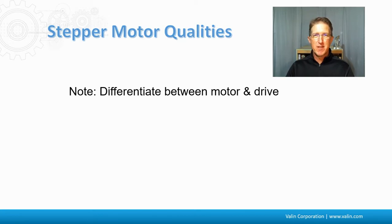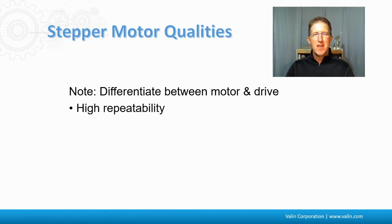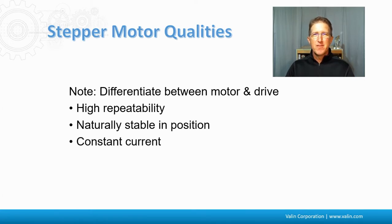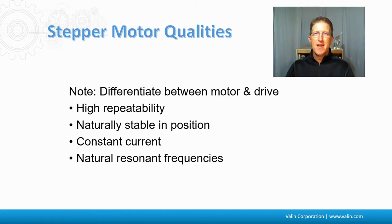I'm going to be talking about stepper motors being open loop. You can use them in a closed loop application, but that's because of the drive. Right now we're talking about the motors. They're highly repeatable. They're naturally stable in position — they don't dither like a servo motor. They have constant current; some drives can cut that current back, but the motors are designed to be constant current. And they do have natural resonant frequencies.